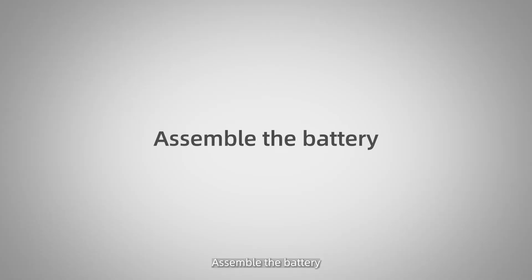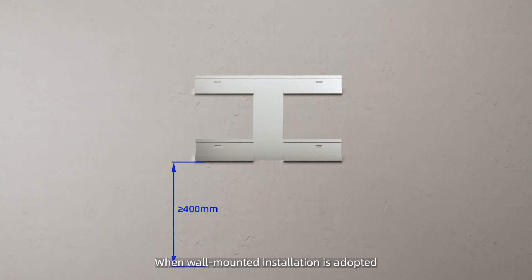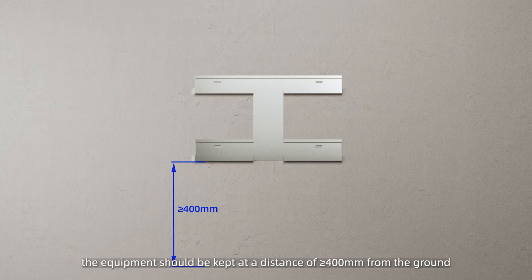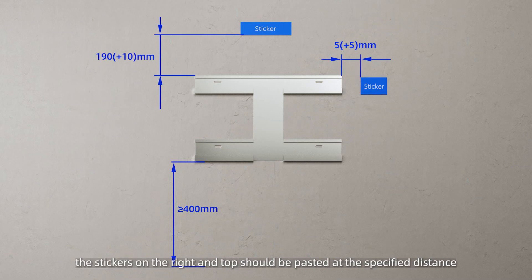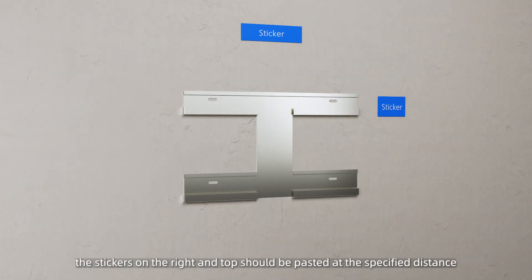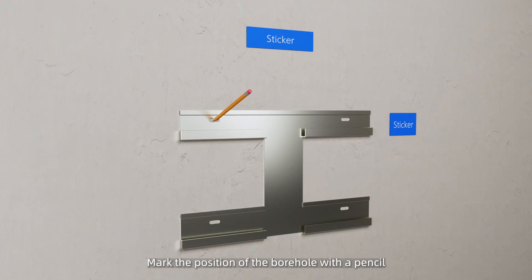Assemble the battery. When wall-mounted installation is adopted, the equipment should be kept at a distance of greater than or equal to 400mm from the ground. After fixing the wall bracket, the stickers on the right and top should be pasted at the specified distance. Mark the position of the borehole with the pencil.